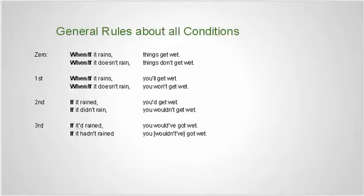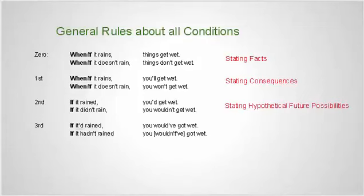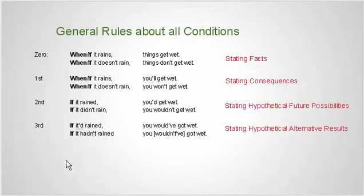One rule about all the conditions: when we use the zero condition, we are stating facts — talking about what happens naturally in nature. In the first condition, we talk about consequences, what will happen. In the second condition, we are talking about hypothetical possibilities or something that probably won't happen. And last, the third condition is the past — it's talking about alternative results. It's not just the past; it also can be now, but we usually use it in the past.